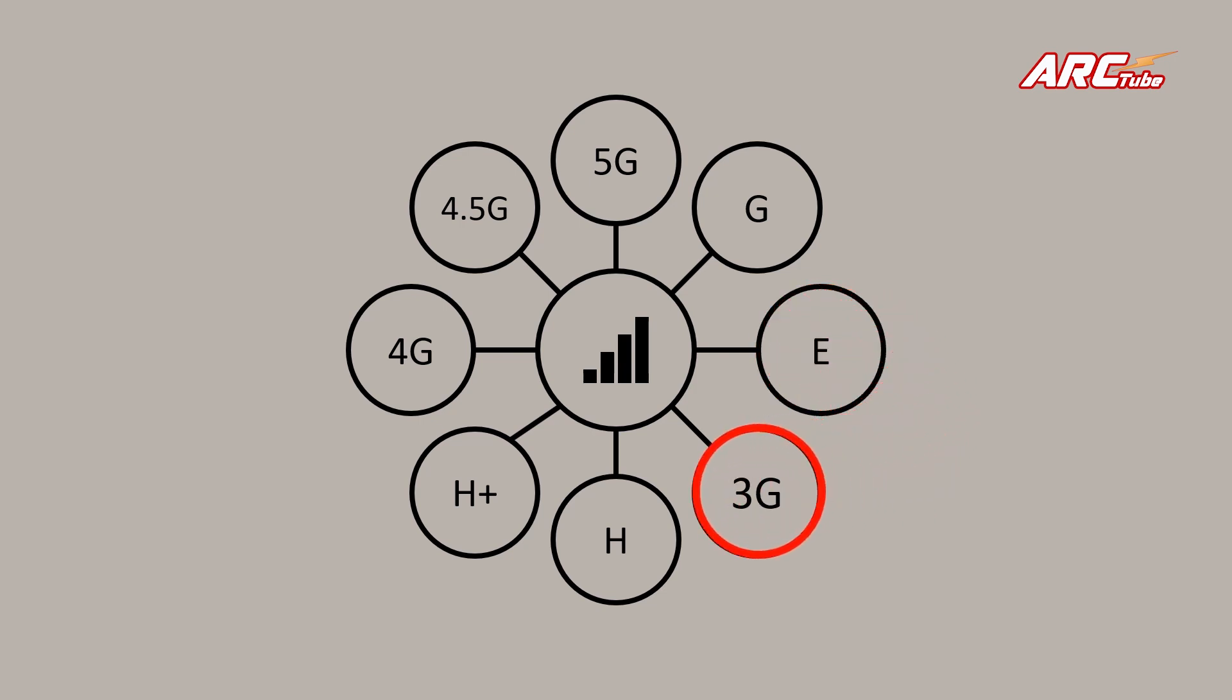3G is the basic third generation technology, and the data rates would be almost same as EDGE, that is a theoretical maximum of 384 kbps.